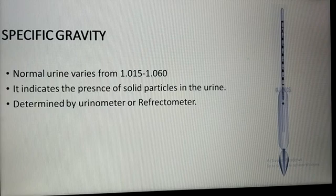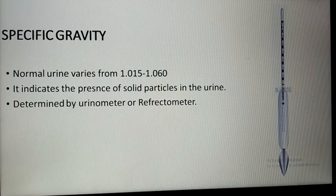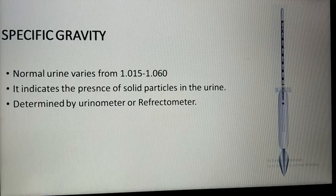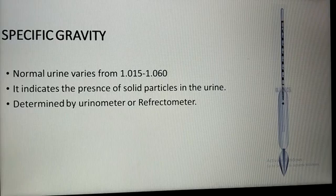High specific gravity of urine, more than 1.060, is found in conditions such as acute nephritis, hematuria, hemoglobinuria, excessive sweating, fever, and diarrhea. Low specific gravity, less than 1.015, is associated with chronic nephritis, diabetes insipidus, and hypertension with renal involvement.